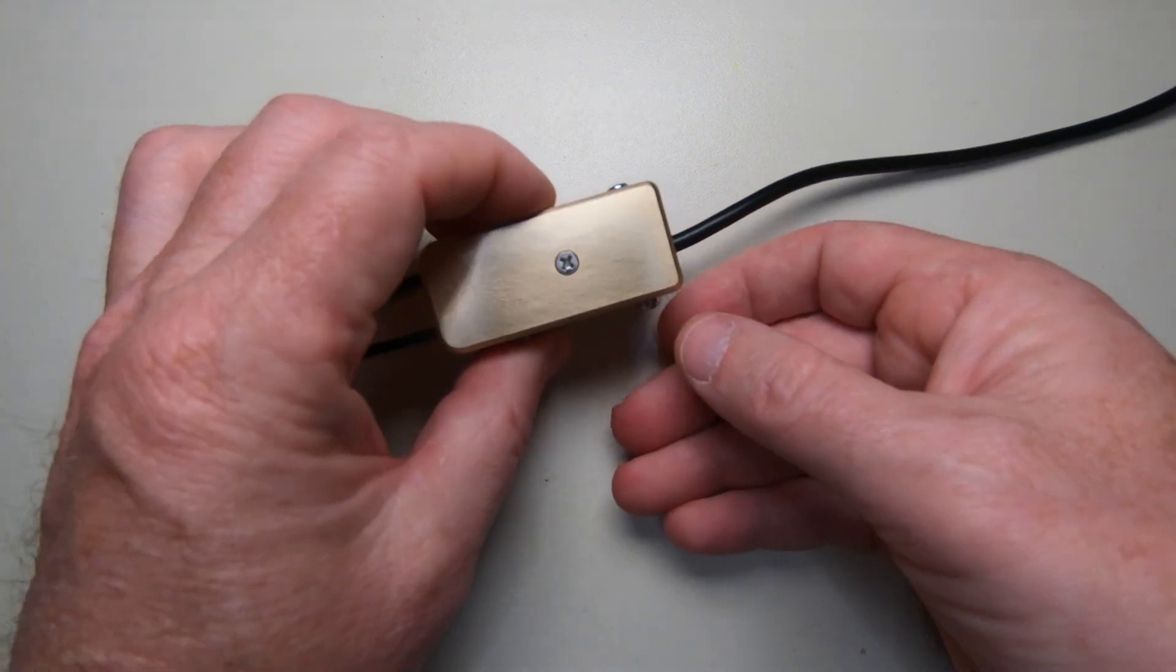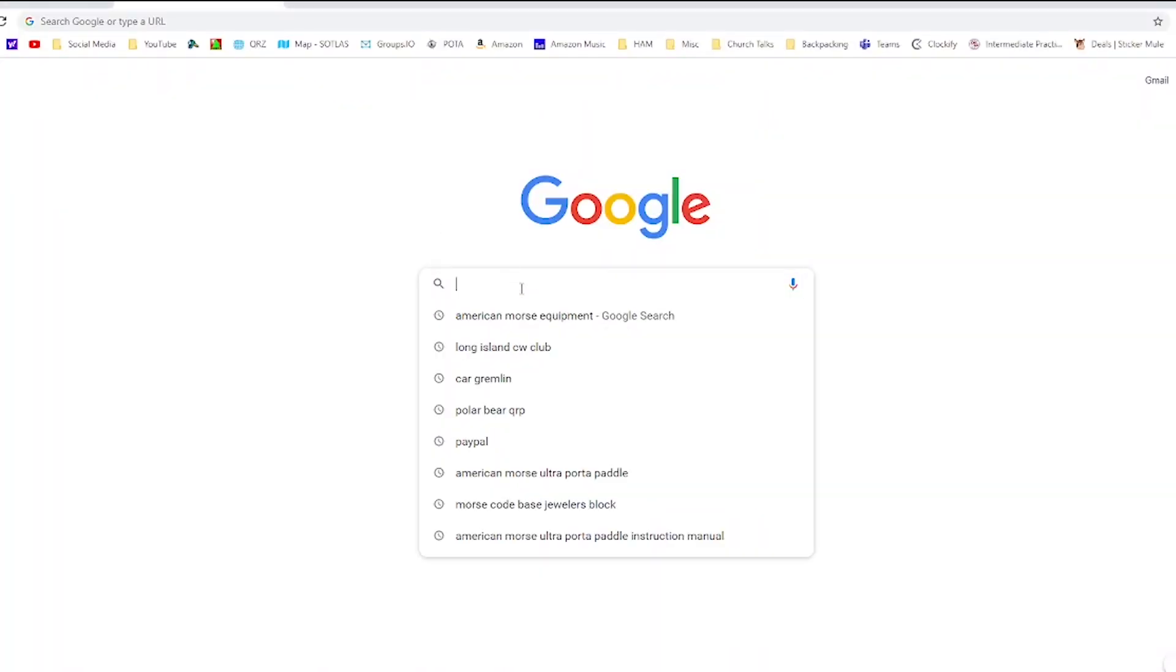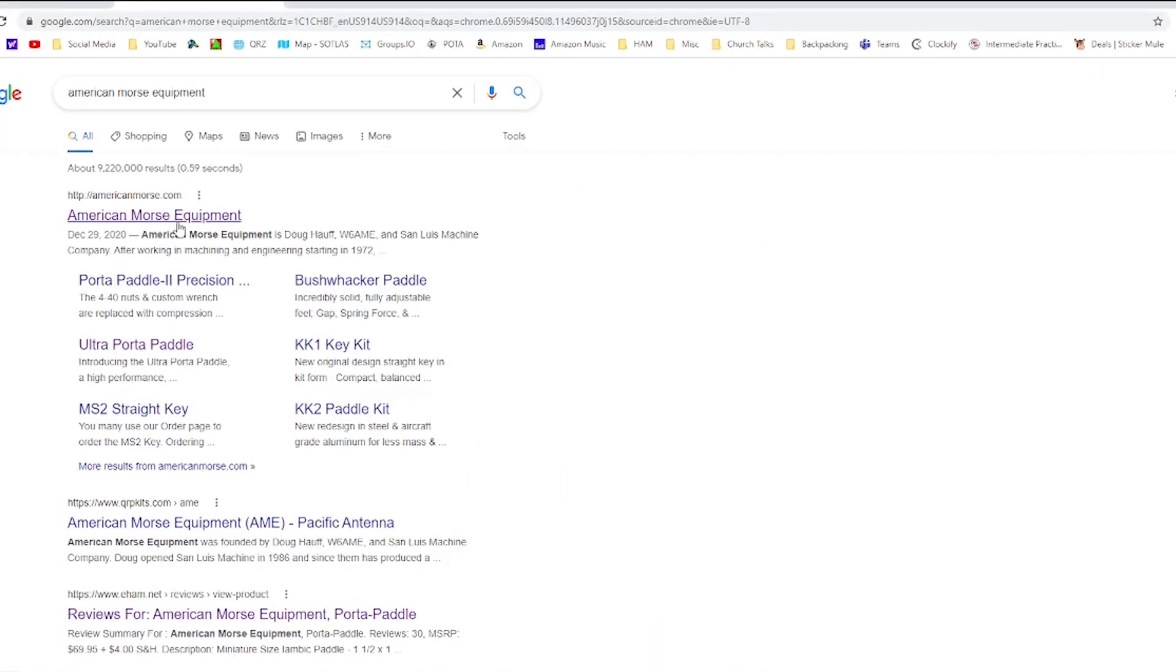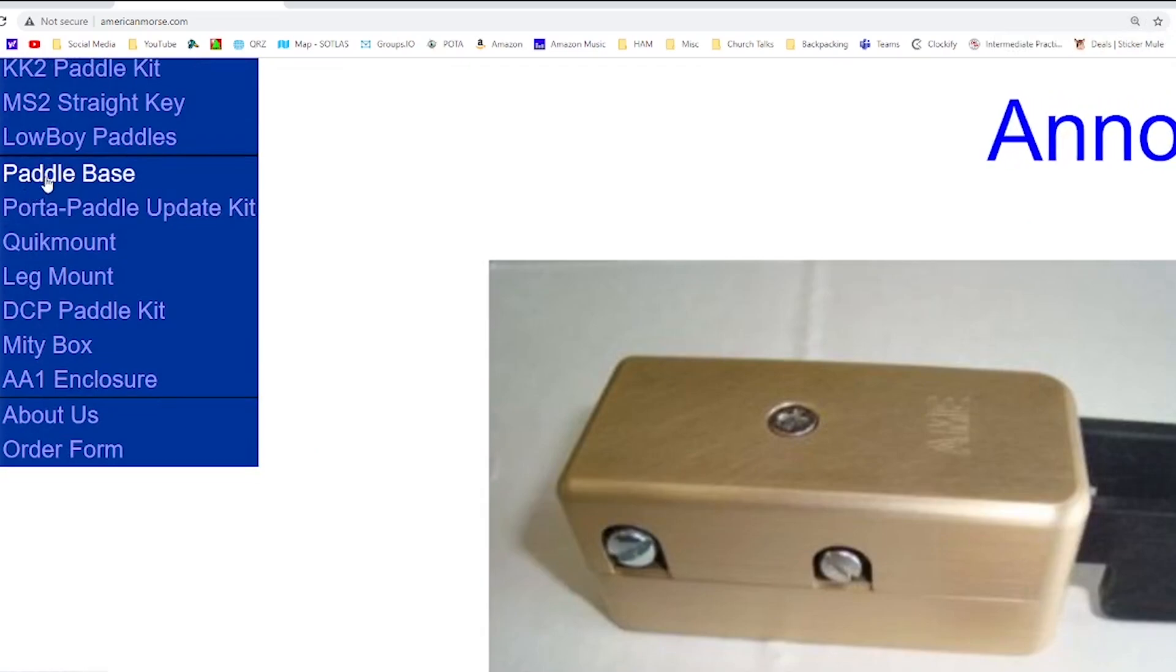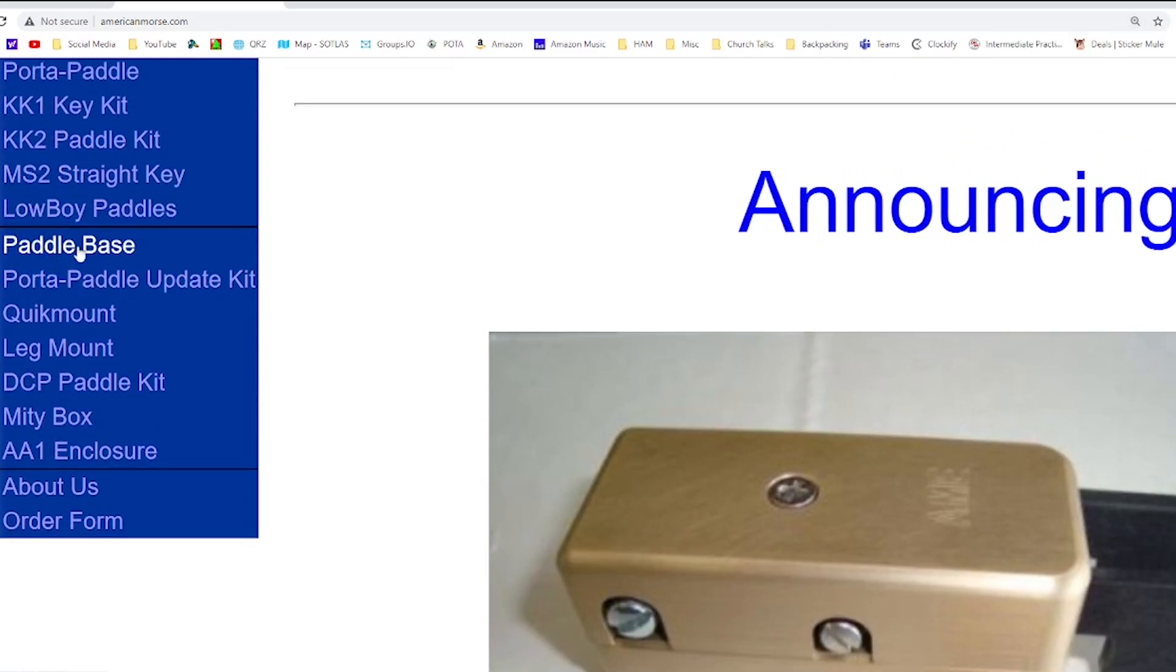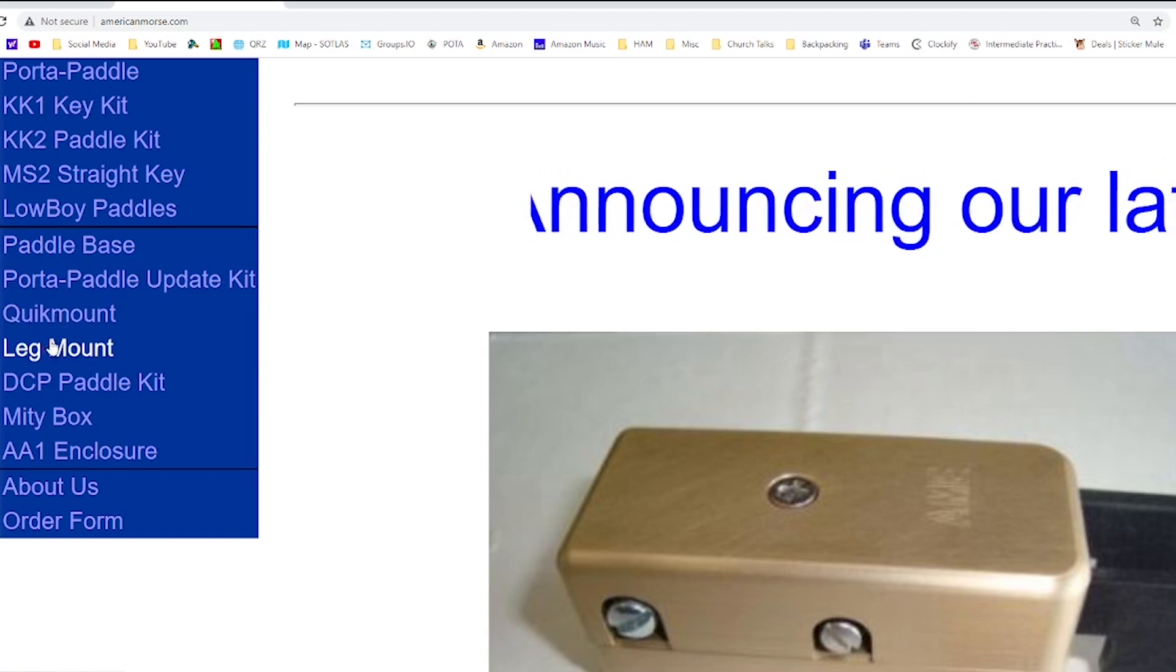Let me just go over there real quick and I'll show you what they have. So American Morris Equipment, go to their website. You'll see here on the left, let me zoom in real quick just so you can see. Here on the left there's the paddle base, the quick mount, and the leg mount.